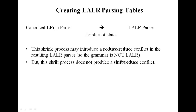How we can see that — how we create the LALR parsing table. First, we will create the canonical LR parser. And from the canonical LR parser, when the core parts of two states are the same, we will combine those states. This shrinking process reduces the number of states and produces the LALR parser. This shrink process may introduce a reduce-reduce conflict, but it does not produce a shift-reduce conflict — it will only produce the reduce-reduce conflict.